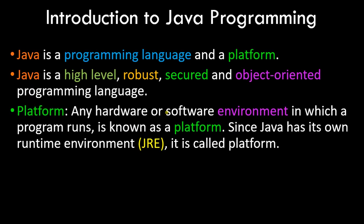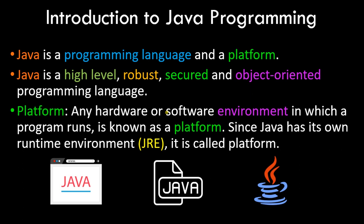This entire video is probably the only theoretical one, along with maybe a couple more covering concepts like JVM and JRE. The rest are mostly going to be practical, because I believe programming should be learned more via practicals. Java is a programming language and a platform — it is a high-level, robust, secured, and object-oriented programming language. Since Java has its own Java Runtime Environment, it is also considered a platform. We'll look at JRE, JVM, and JDK in more detail in further videos.